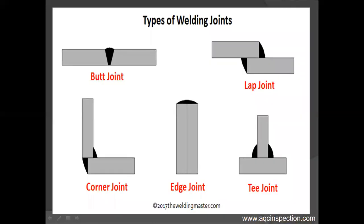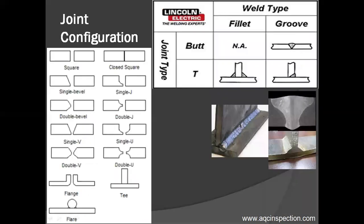Types of weld joints include butt weld, lap joint, corner joint, edge joint, T-joint, and a few more. The major welding types are groove weld and fillet weld.